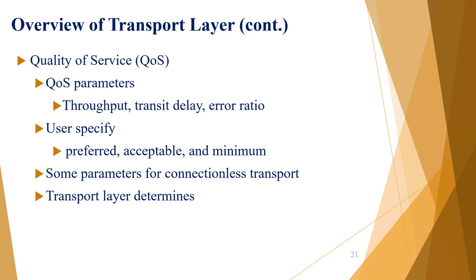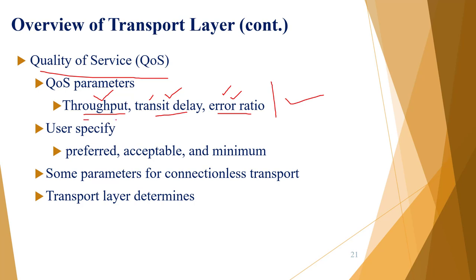The transport layer provides quality of service (QoS). Three important QoS parameters are: throughput (should be high), transit delay (should be low), and error ratio (should be low). These three parameters measure the quality of your network. If transit delay — the time taken for a packet to travel from source to destination — is less, the network is good; if more, the network is slow.